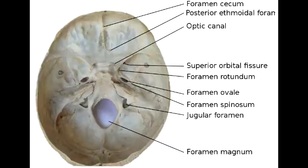What cranial nerves and vessels pass through the superior orbital fissure? Cranial nerves 3, 4, 5-1, and 6, along with the ophthalmic vein and sympathetic fibers, pass through the superior orbital fissure.